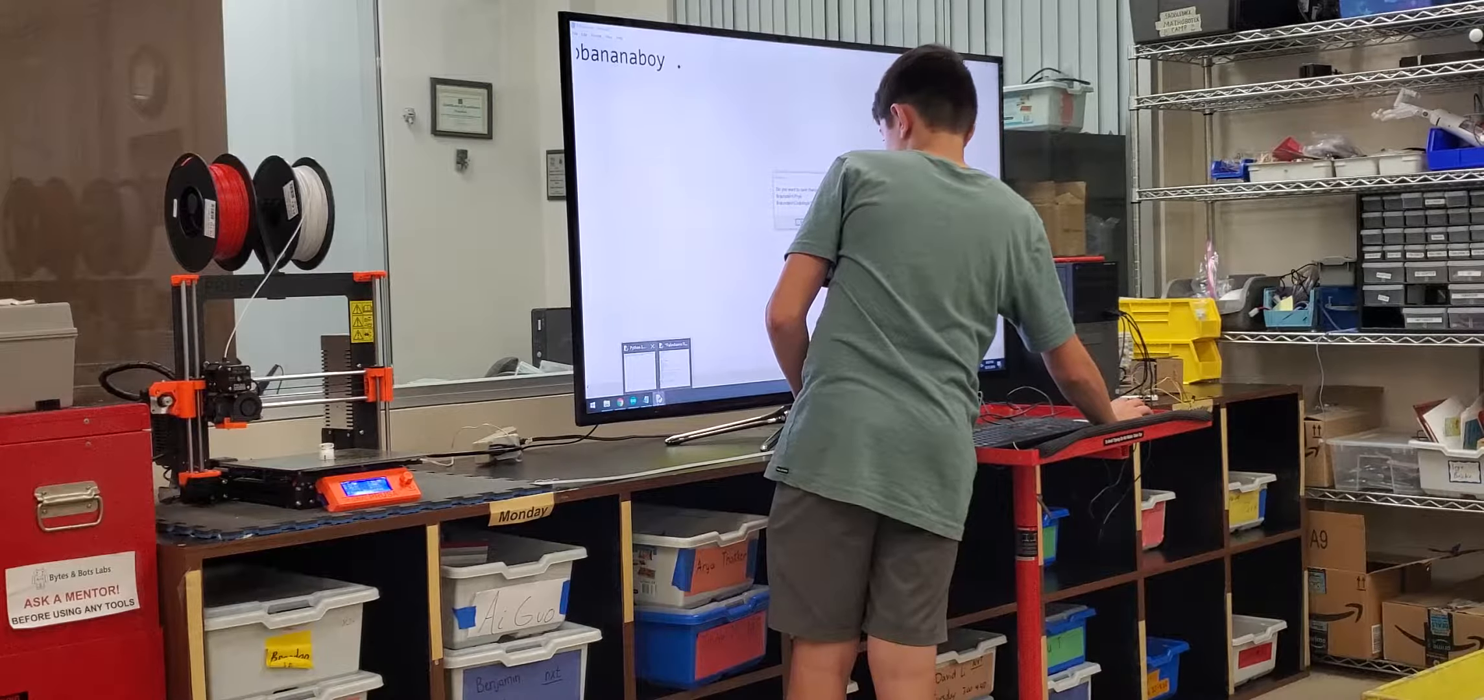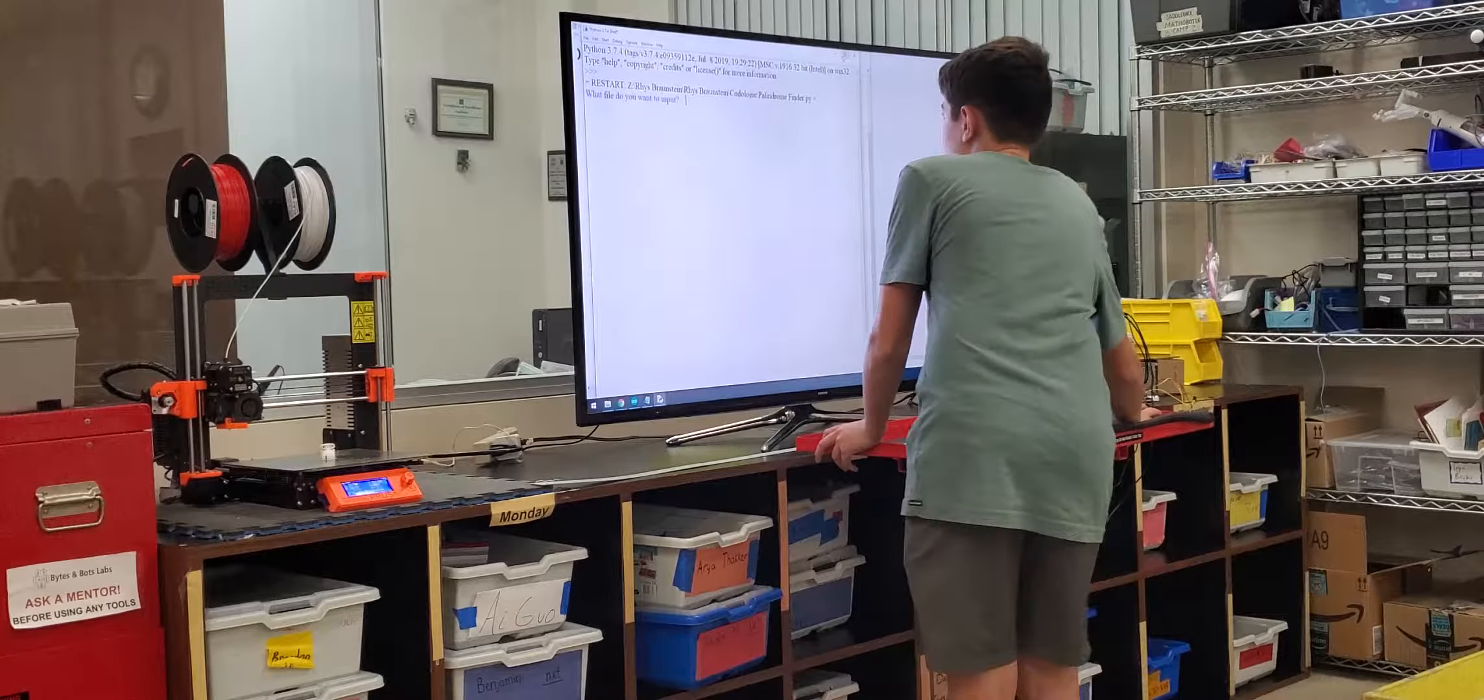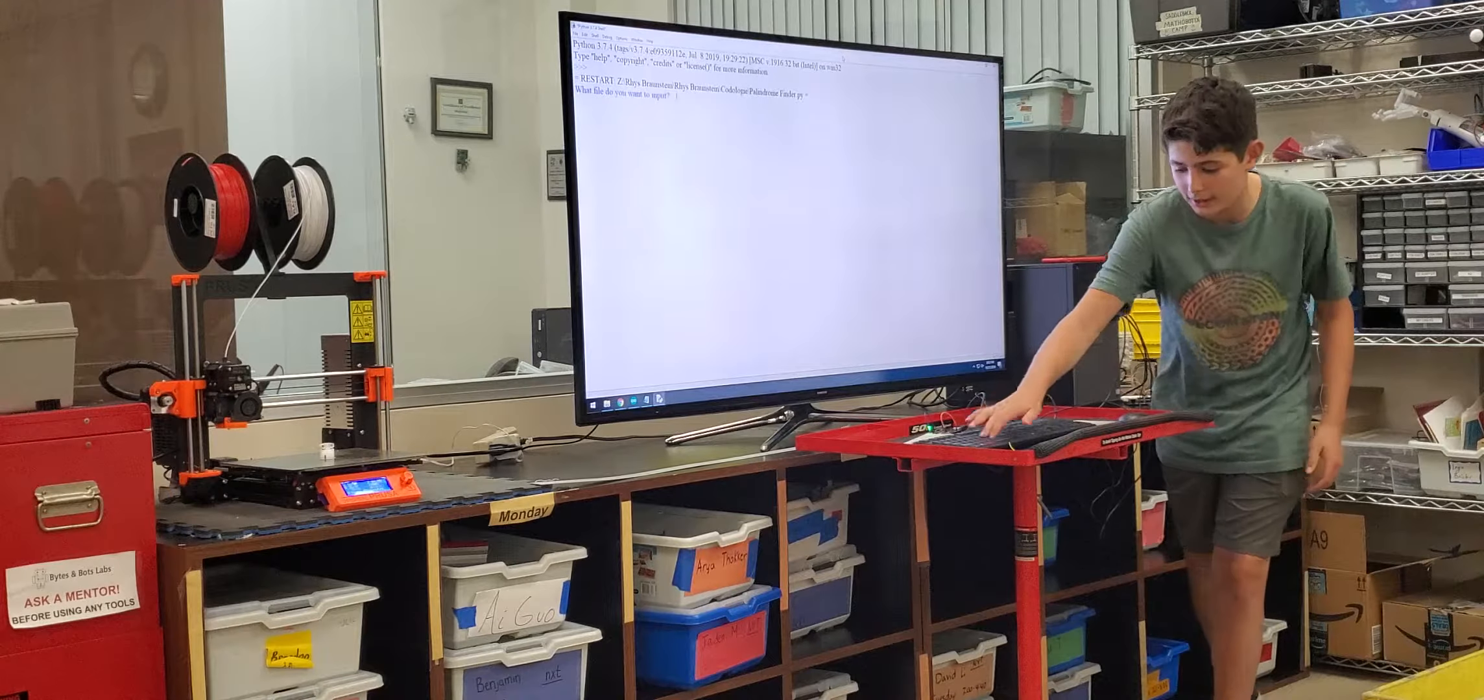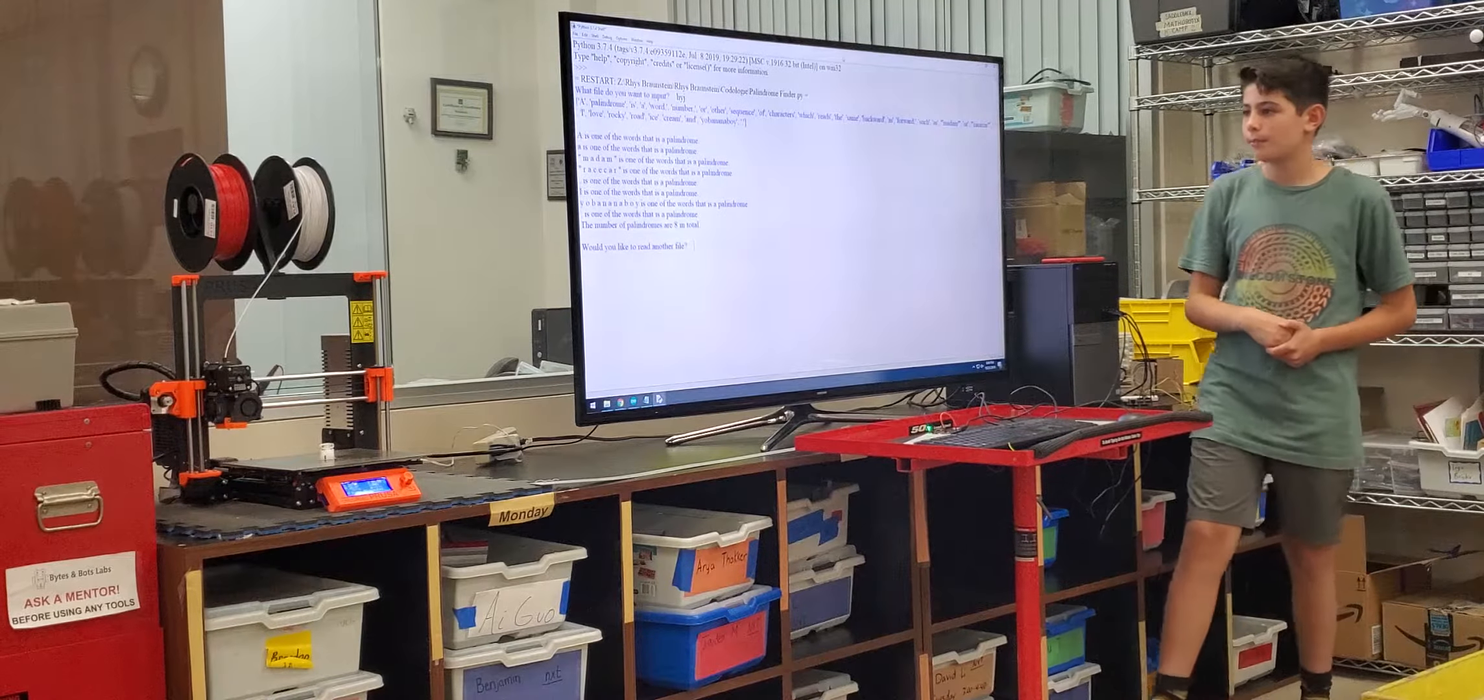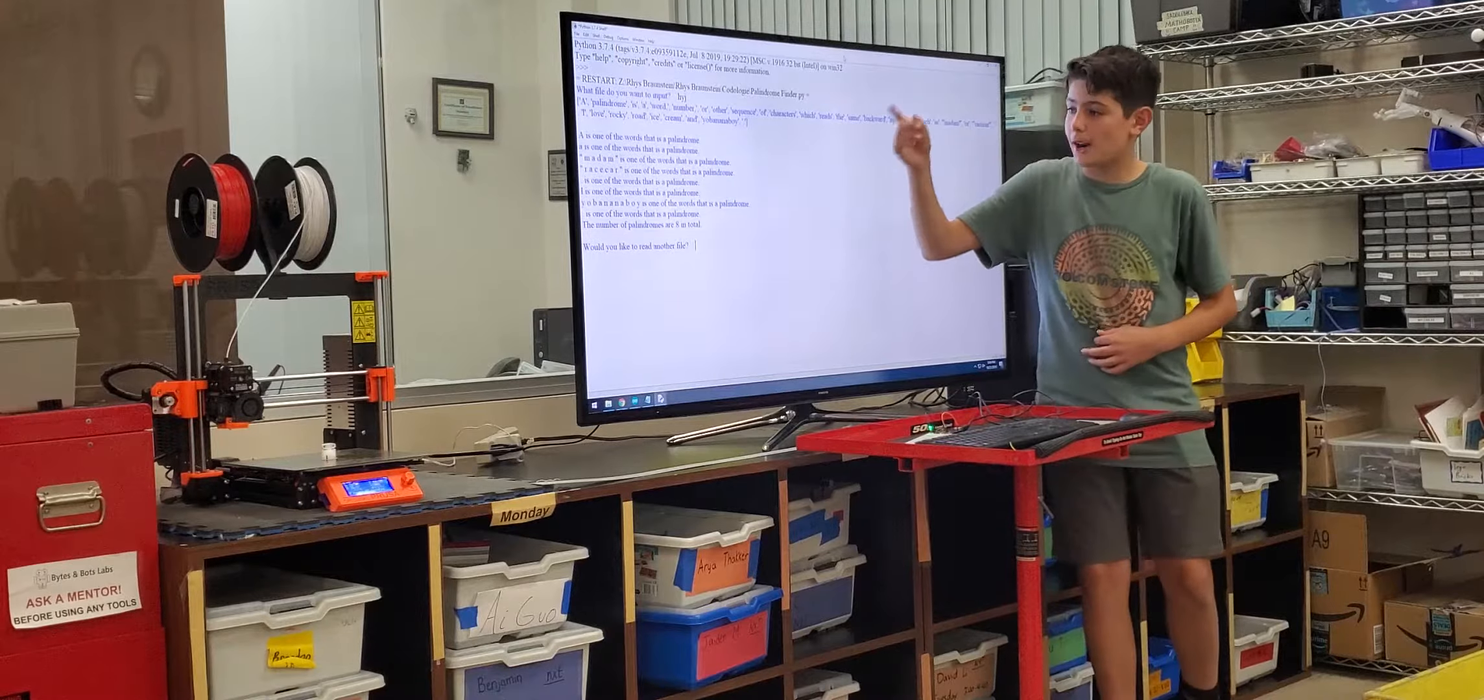And I will run this. So, it asks me which text file I'd like to input. This feature I didn't really bother with because there's only one text file, so you can basically enter anything. There's no parameters. So it prints out the text file in a list, and it says each word which is a palindrome. And there's A, A, madam, race car, period, I, and then banana boy, period.